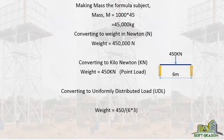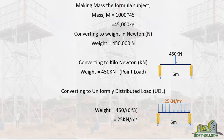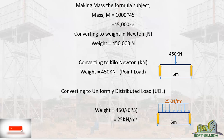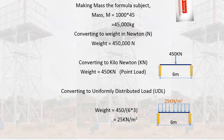You can also convert it to a uniformly distributed load (UDL). Taking the 45,000 kilograms — where 6 is the length of the tank and 3 is the width of the tank — once you multiply and divide, you get 25 kN per meter squared, which is the UDL value we will use to design our water tank in the subsequent lesson. Please subscribe and like the video. Thanks.